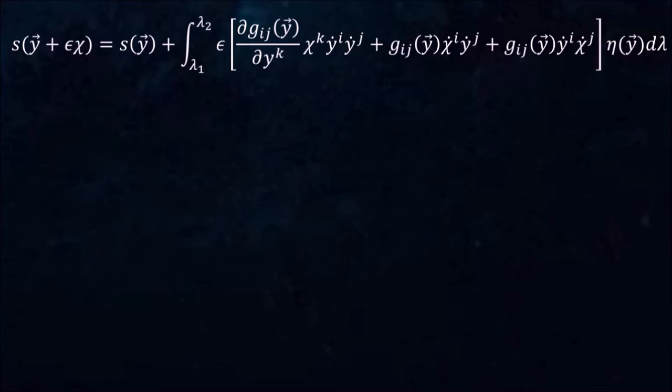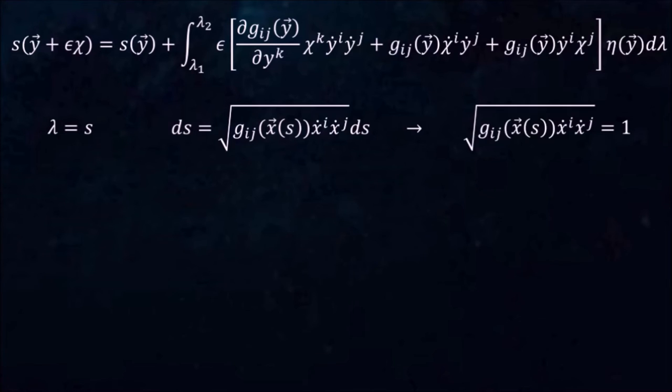But first, let's make our lives a little bit easier. I said at the beginning that lambda can be any parameter at all, and it is still true. However, if we choose lambda to be the distance traveled along the path, eta becomes 1. To see this, simply plug in the expression for ds in terms of the metric and the components of x-dot of an arbitrary curve x. ds appears on both sides, so we can cancel it out. What's left is this, but this is just the inverse of eta. So eta must be 1.